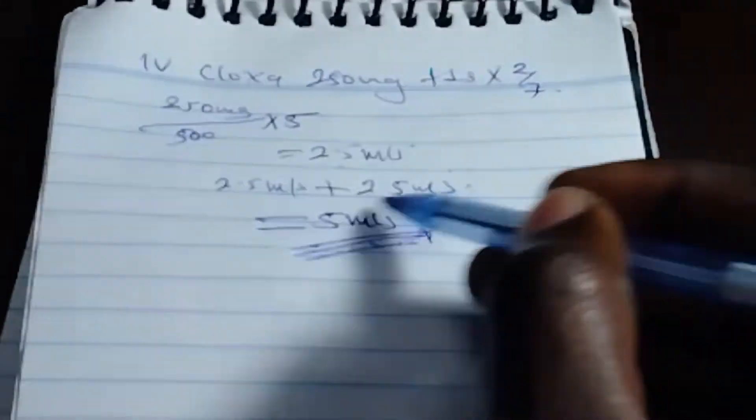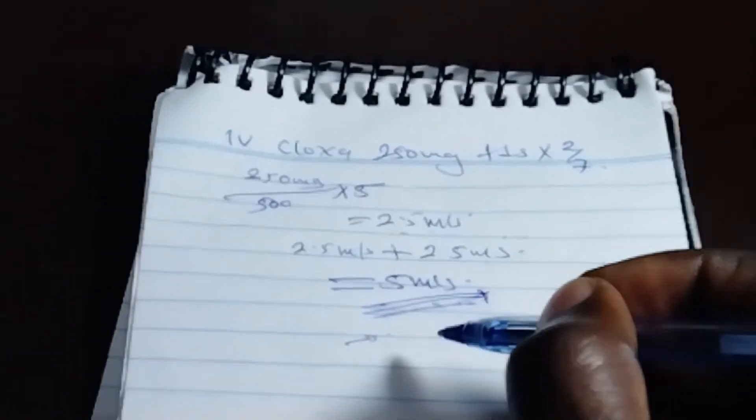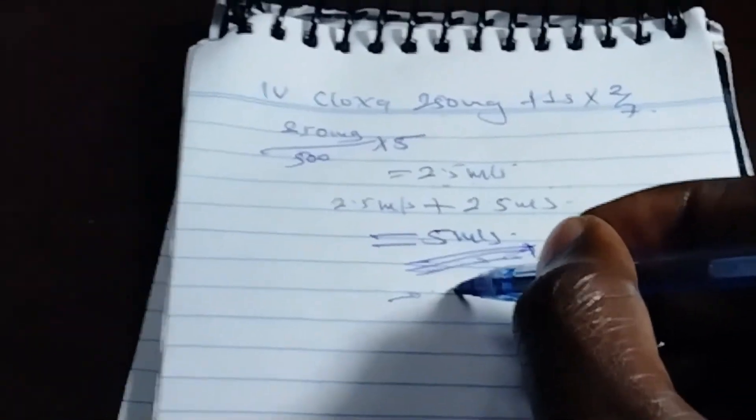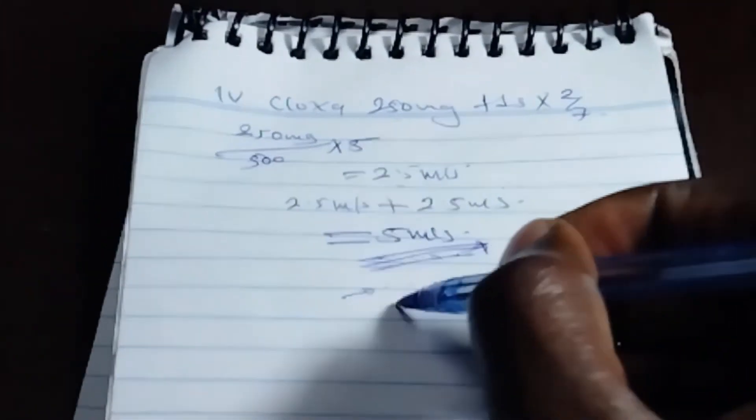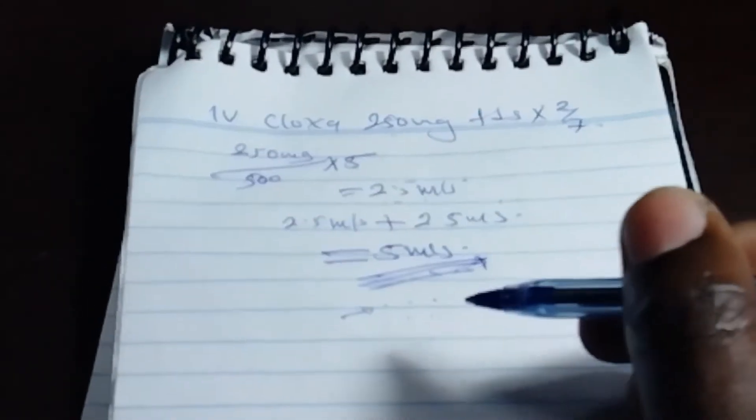The reason why we are going to double dilute this thing is because cloxa is very hot. If you give it at the vein without continuous diluting, it can even cause necrosis, even abscess.